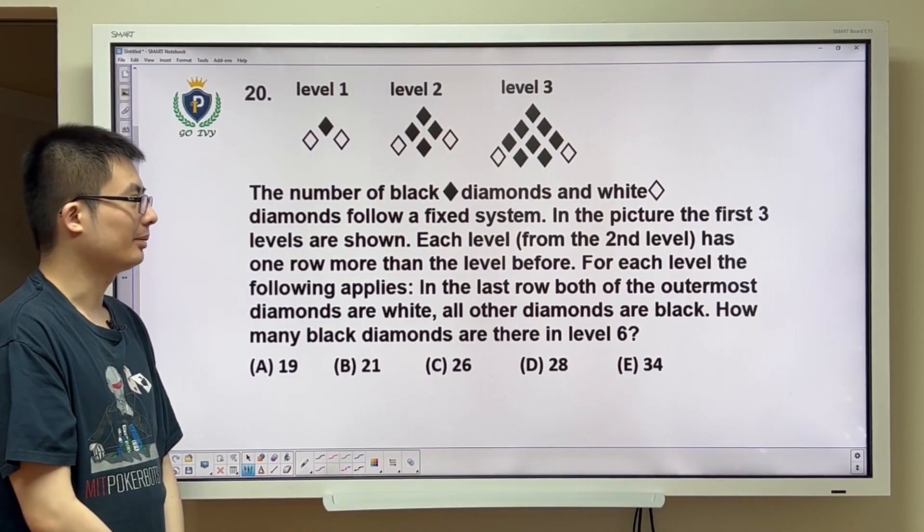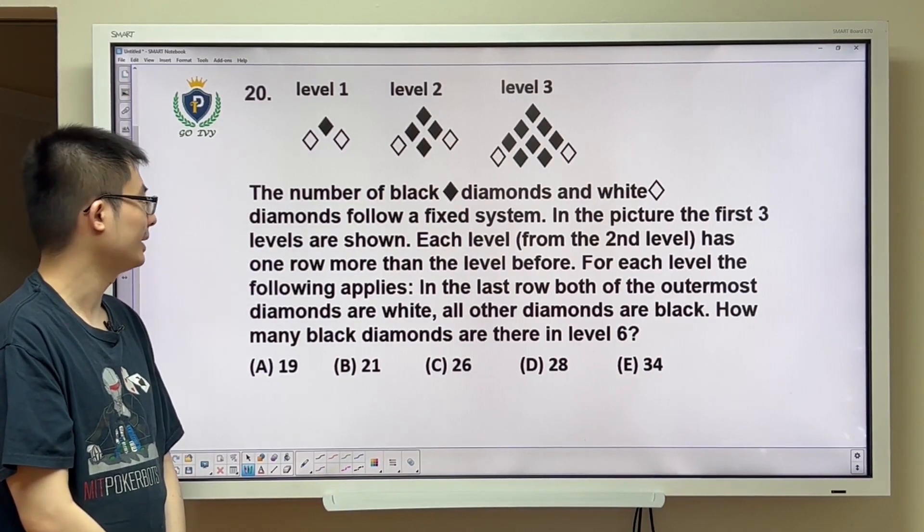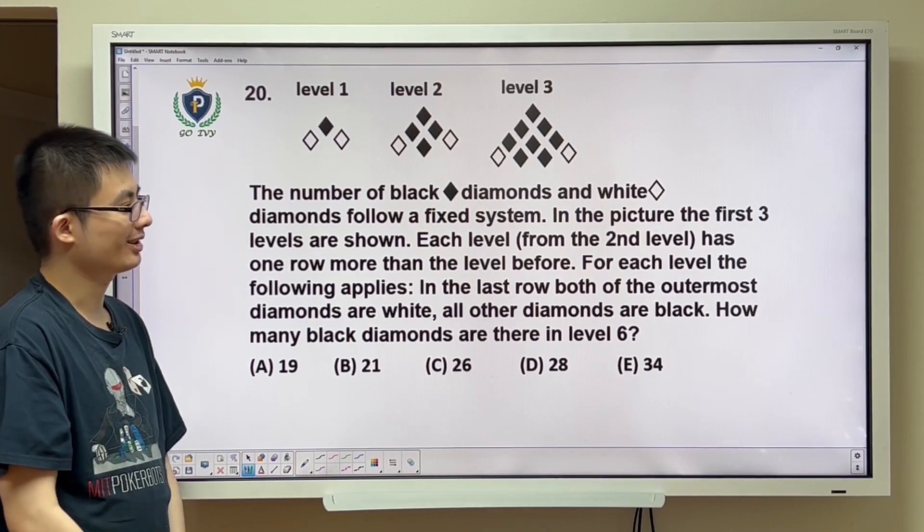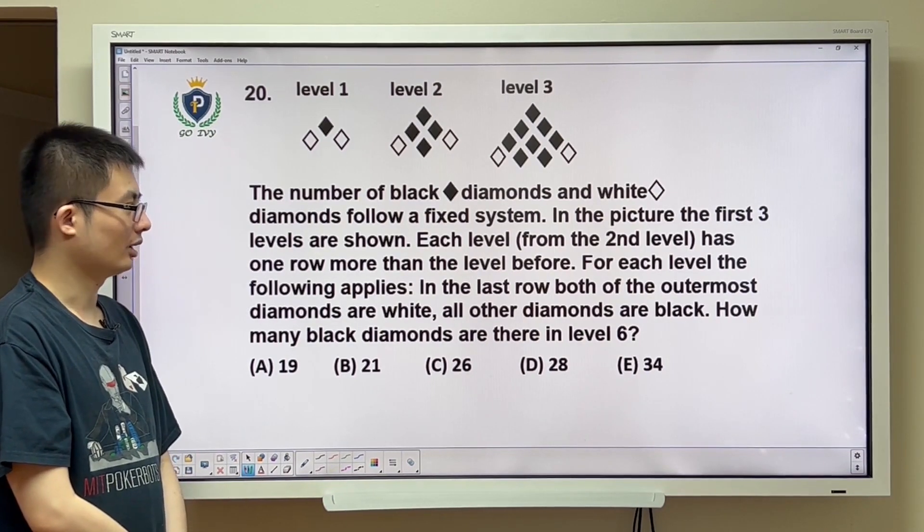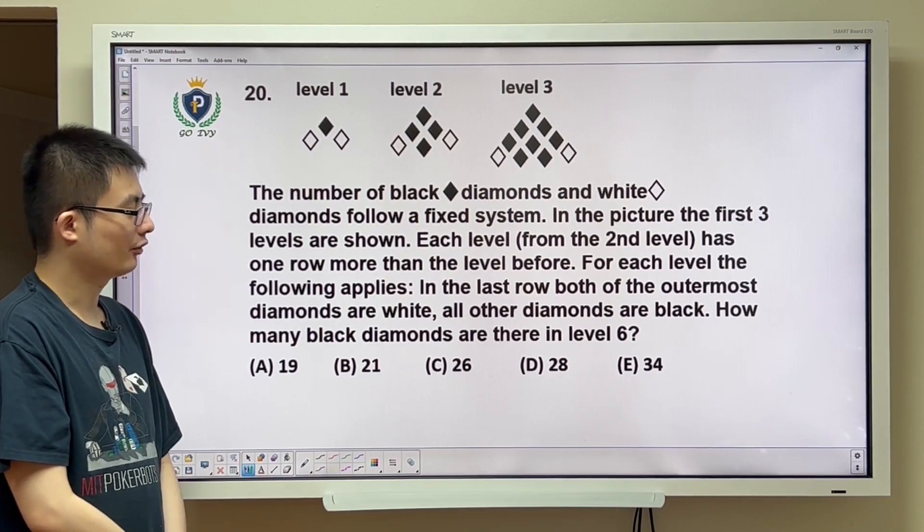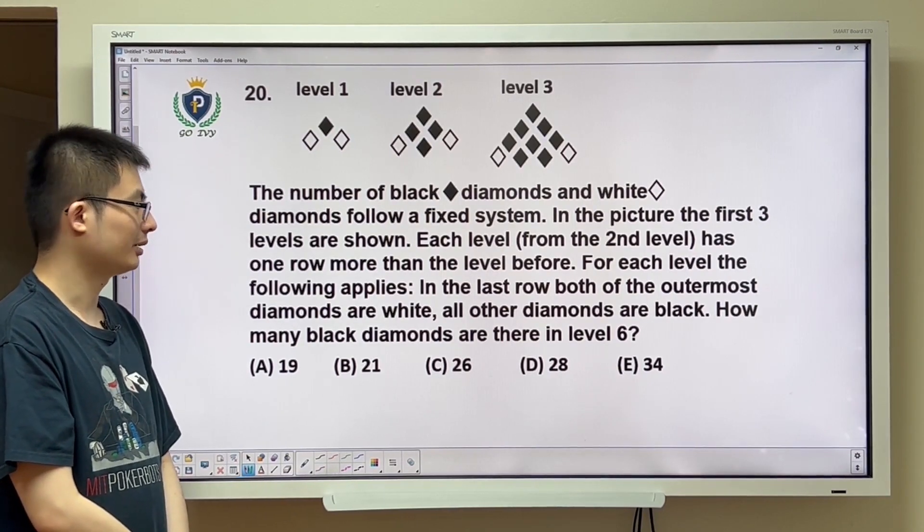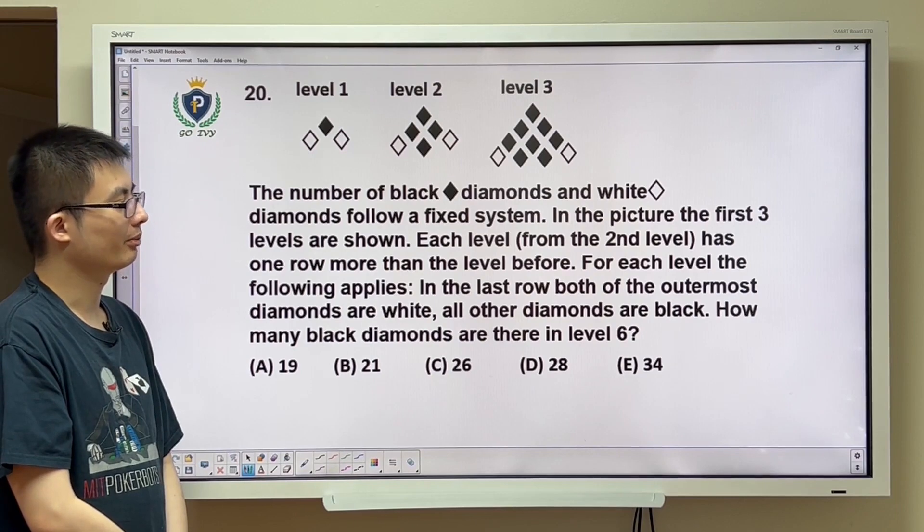The number of black diamonds and white diamonds follow a fixed system. In the picture, the first three levels are shown.